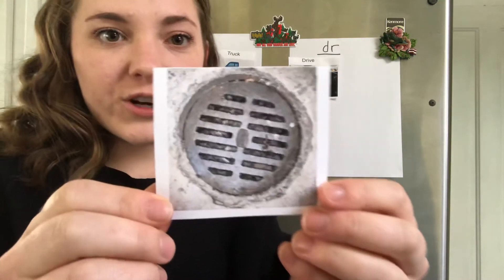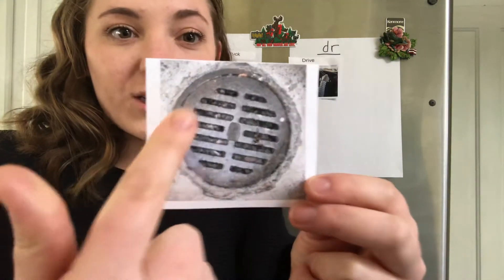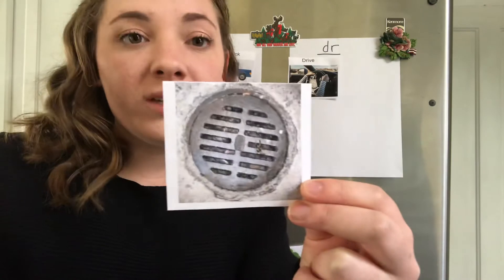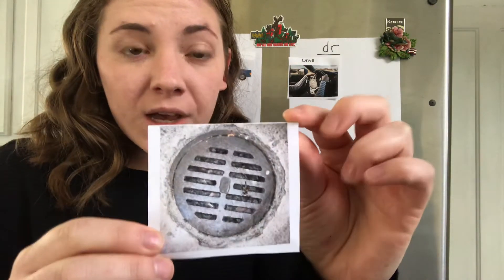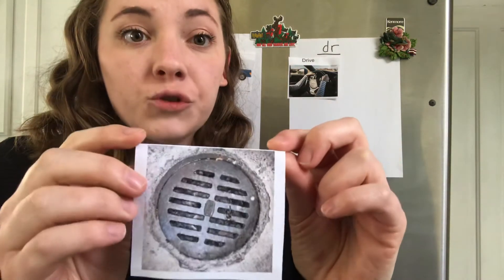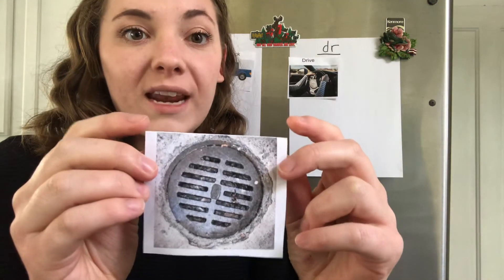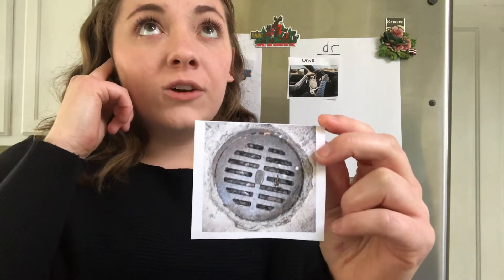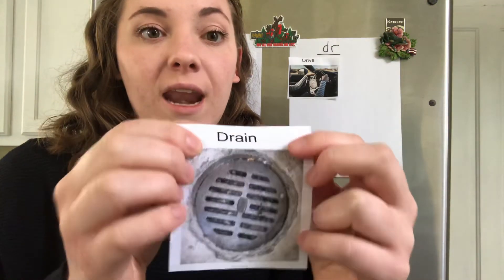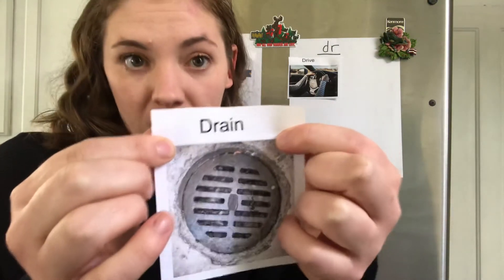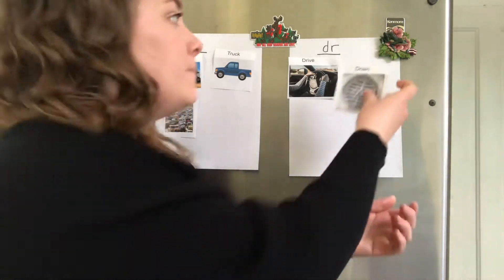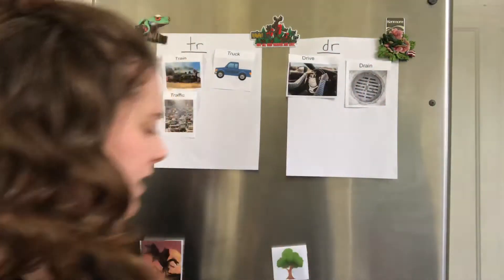Next picture. This shows a picture of what? Sometimes water might go down it — you usually have it in the bathtub, and it's on the street as well sometimes. So this is a drain. Drain. Listen to the beginning: D-dr. Drain. So it's spelled with a D-R. Sounds like T-R but it's not. We're gonna put it on the DR side.